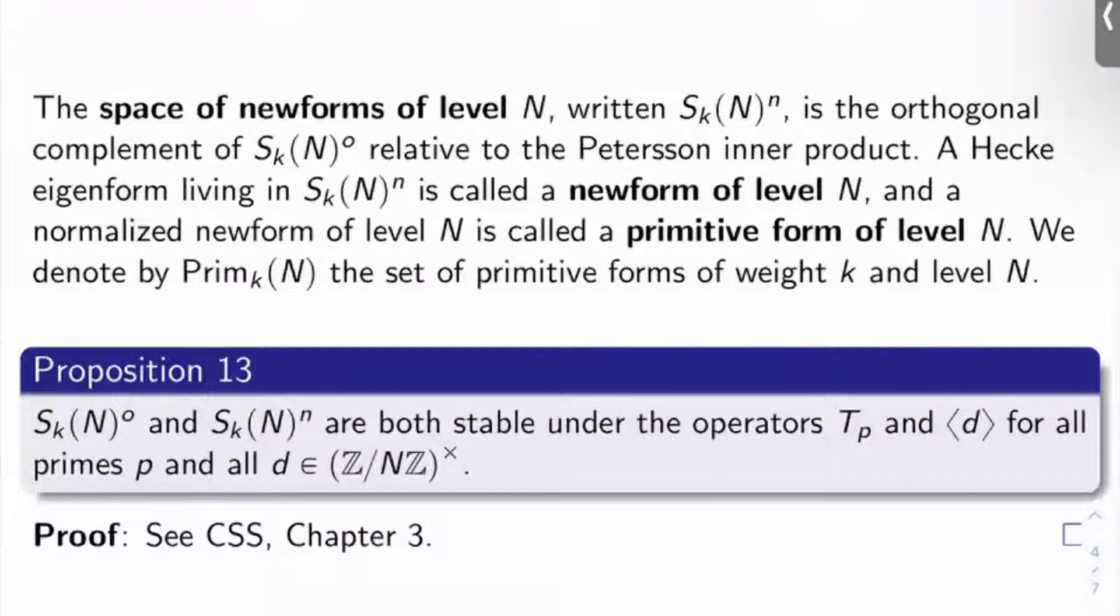What's a new form? It's essentially anything that's not an old form. More precisely, the space of new forms of level N written S_K(N) superscript N, N for new, is the orthogonal complement of S_K(N)^O relative to the Peterson inner product. This is why it was important to discover that there was an inner product on S_K(N), so that we can take the old forms and look at their orthogonal complement and call those the new forms. A Hecke eigenform living in S_K(N)^N is called a new form of level N. So again, not just any generic element of S_K(N)^N is going to be called a new form, only the Hecke eigenforms living there.